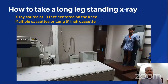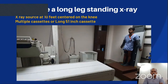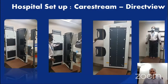Another indication of distal femoral osteotomy is a double level osteotomy in a varus knee, where there is a significant varus and a failure. Taking proper x-rays and radiological planning for the wedge calculation are very crucial steps in a successful osteotomy. For a full-length standing x-ray of lower limbs, the patient stands at a distance of around 10 feet with the beam centered on the knees. Multiple cassettes or a long 51-inch cassette can be used.